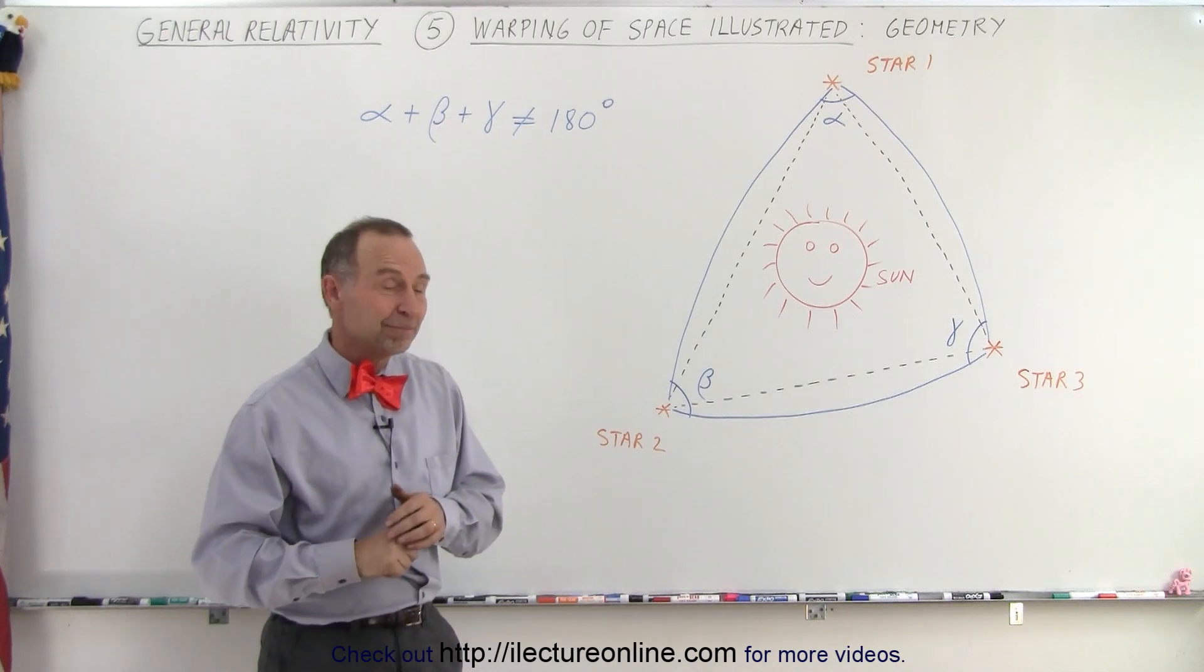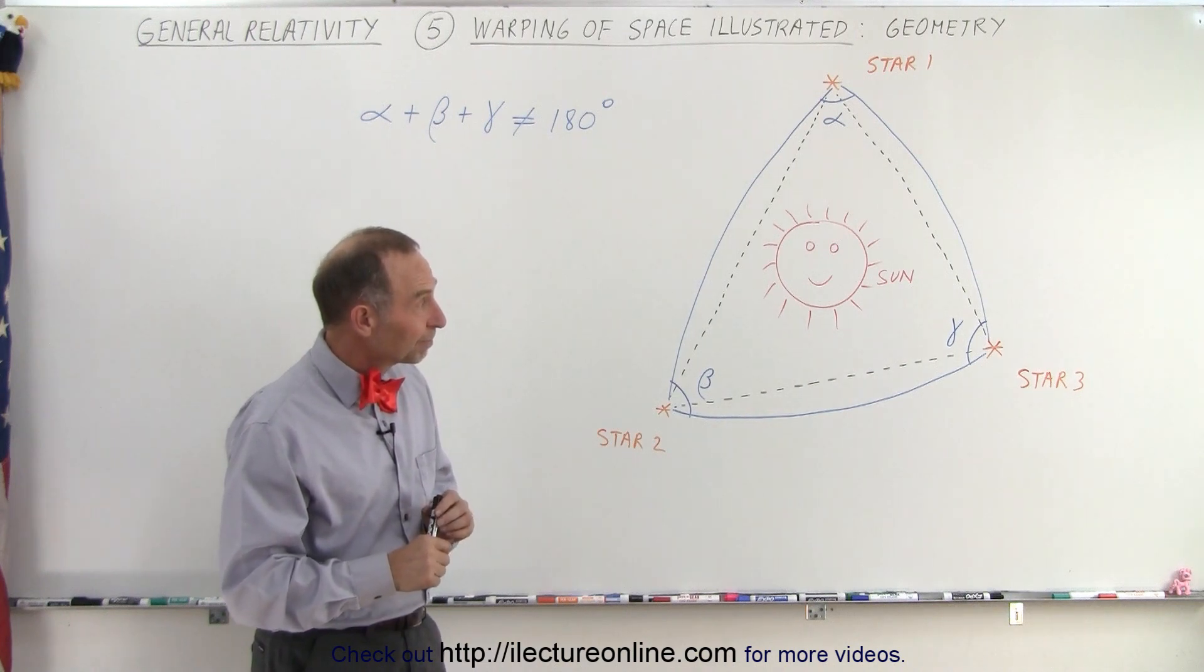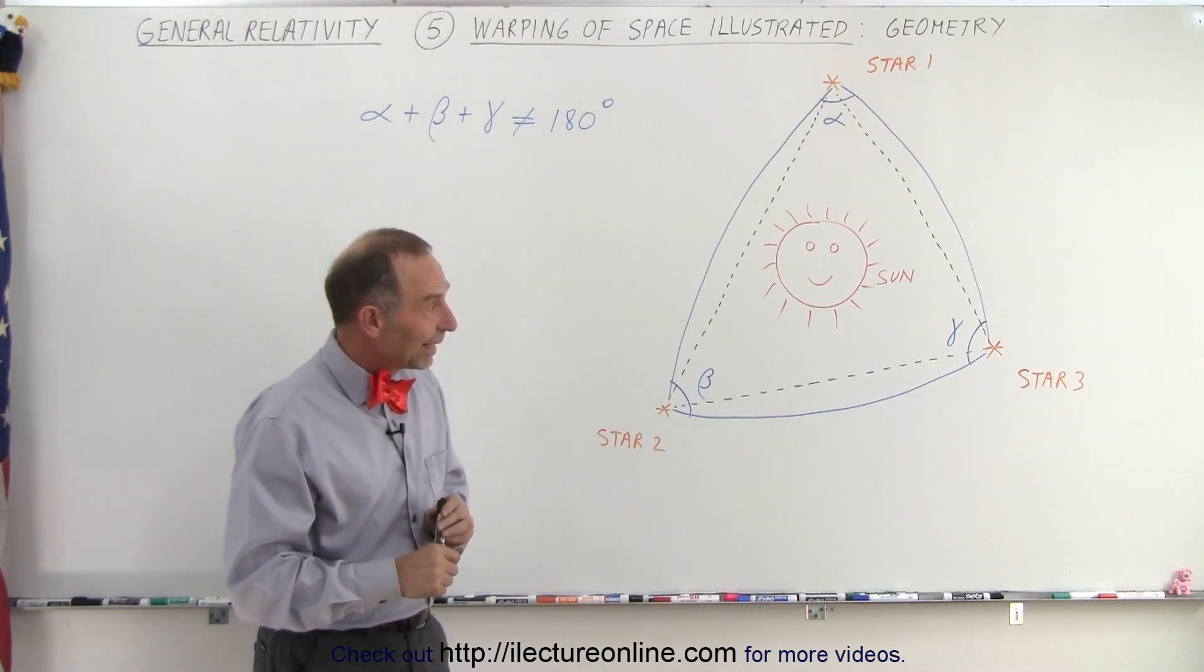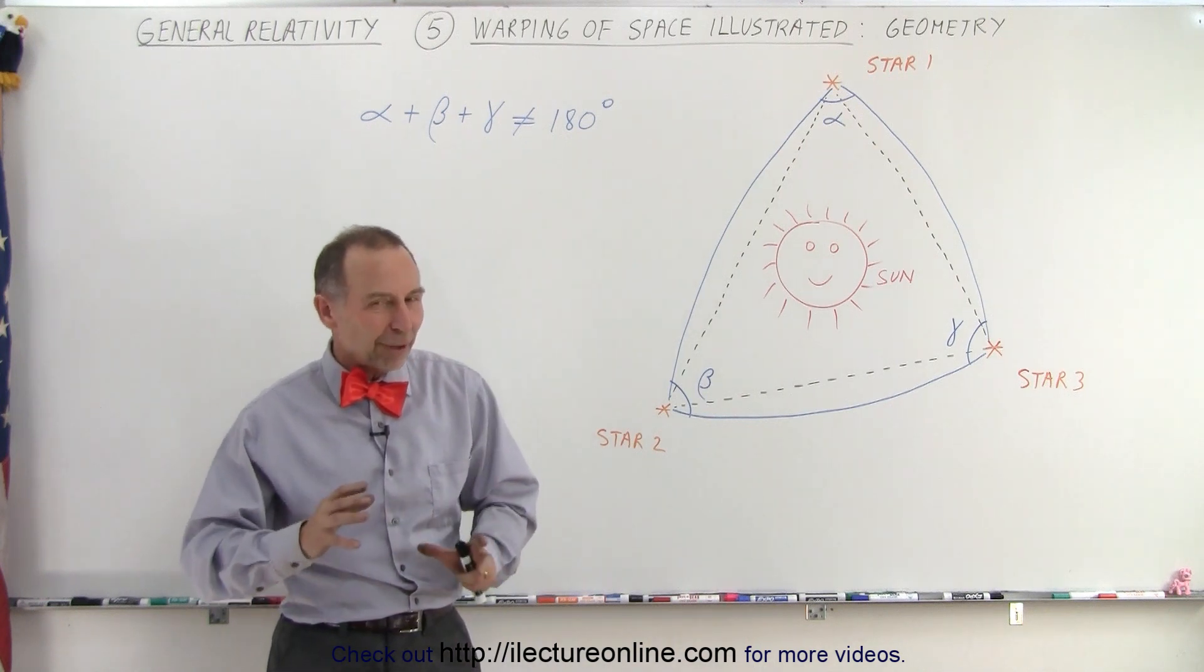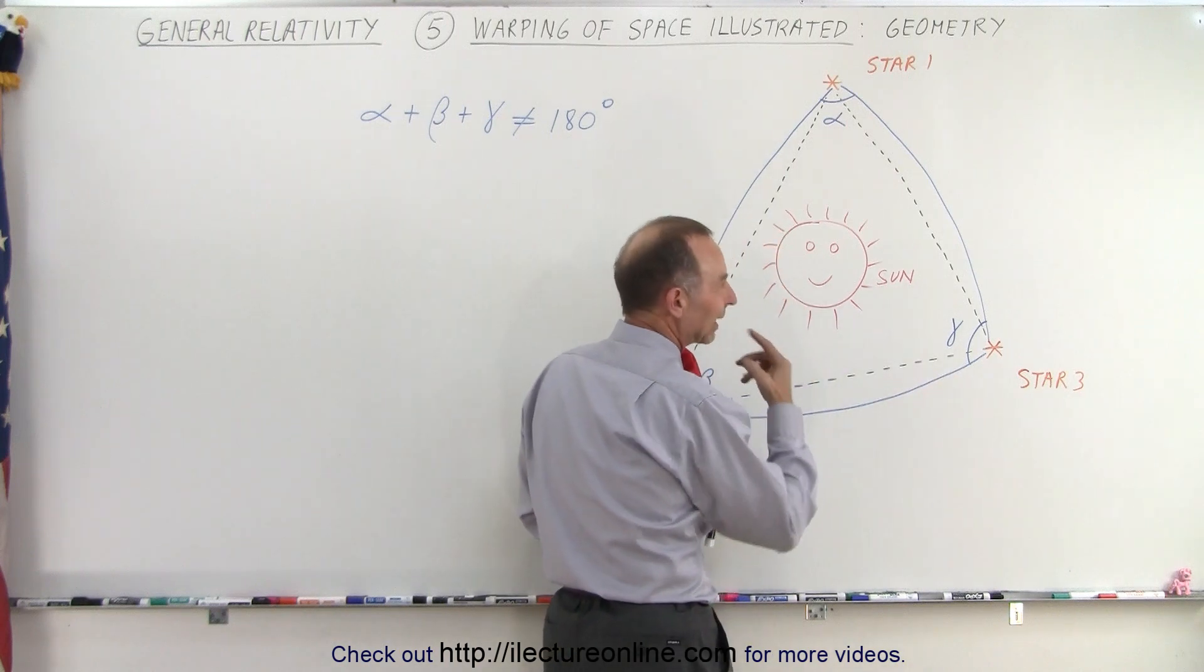The way you have it drawn, it almost seems like it curves away from the Sun. Probably it would make it so that it should curve towards the Sun. You're correct that it depends how you look at it. You might get the feeling that it curves away from the Sun, but that's not the case.